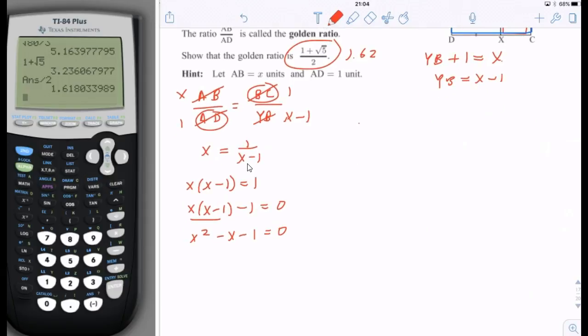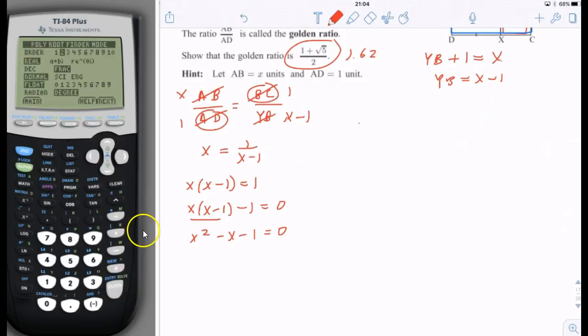This doesn't factor. You need to use the quadratic formula, or I'm just going to use polySMLT. So I'm going to do polyRootFinder, and my coefficients are going to be 1, negative 1, negative 1. So I'm going to put 1, it's already 1, negative 1, and negative 1, and solve. Hey, look at that. There it is, the golden ratio, 1.62.